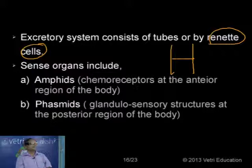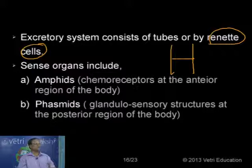Regarding respiratory organs, though the animals are living inside as intestinal parasites, normally in all cases we don't have any specific respiratory organs or circulatory systems — no circulatory system, no respiratory systems. The animal respirates mostly by anaerobic method in the case of parasitic forms. If it is a free-living form, it respires by aerobic method.